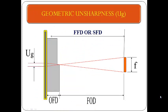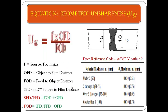The geometric unsharpness is UG. FFD is the variation of sharpness of the dividing lines between two density fields — that is, the source-to-film distance or focal-to-film distance. OFD is the object-to-film distance, and FOD is the source or focal-to-object distance. The equation for geometric unsharpness is: UG = (focal size × OFD) / FOD.